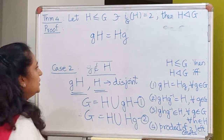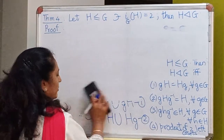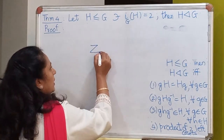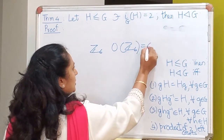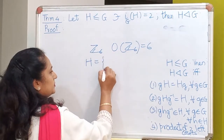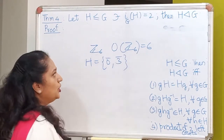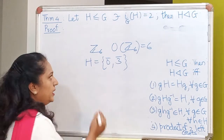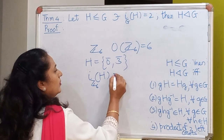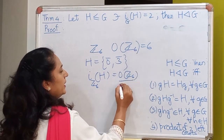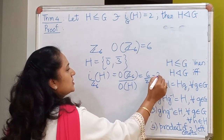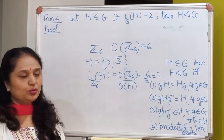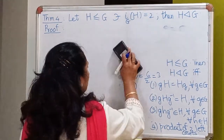What about the converse? Suppose H is a normal subgroup — does its index have to be 2? The answer is no. Consider the group Z6: the subgroup H = {0̄, 3̄} is normal in Z6 because Z6 is abelian. But the index is the order of the group divided by the order of the subgroup, which is 6/2 = 3. So this is a normal subgroup whose index is not 2. The converse of this theorem is not true in general.